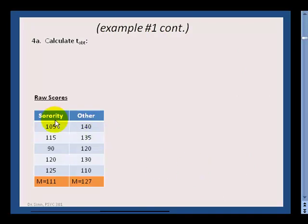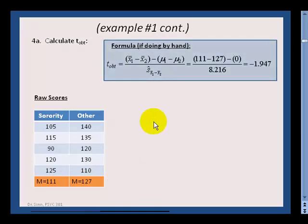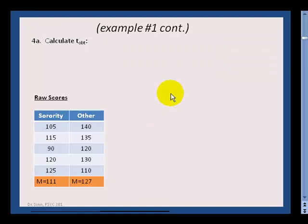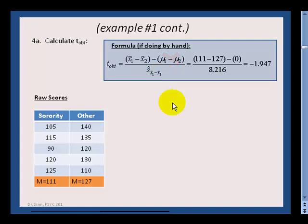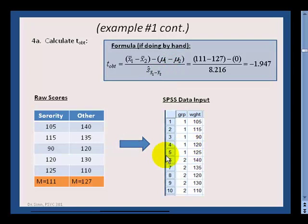In step four, we calculate t obtained. We have raw scores comparing the weights of sorority women to non-sorority women, and I've worked out the means by hand. The formula has sample mean stuff, mu stuff, and standard error stuff. The mu1 minus mu2 term typically drops out because we set it to zero, leaving the difference between the means divided by the standard error of the difference. You're not going to learn to calculate that by hand — we'll get it from the SPSS printout.